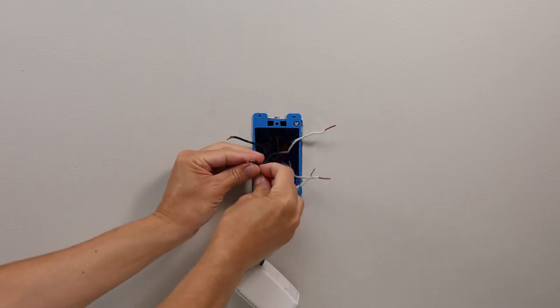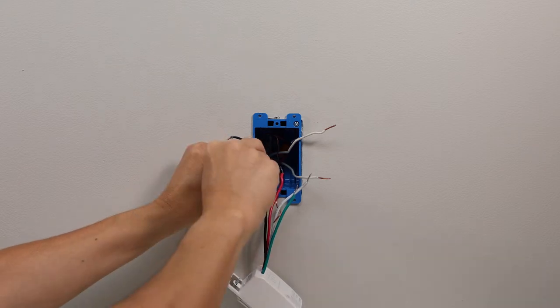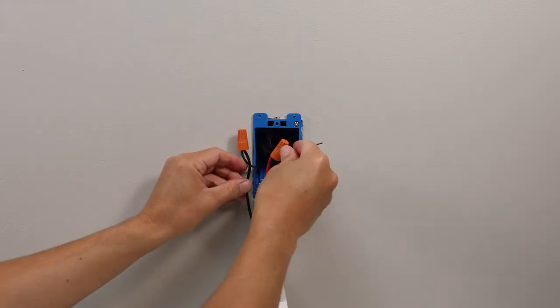Remove the faceplate from your Wemo light switch. Then connect the black line and red load wires from the switch to the corresponding ones in the wall.